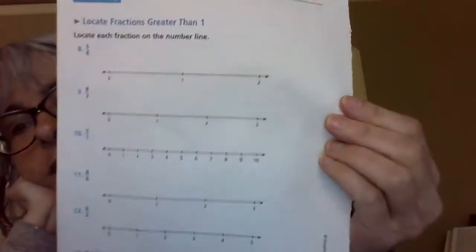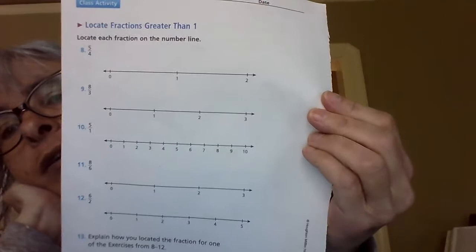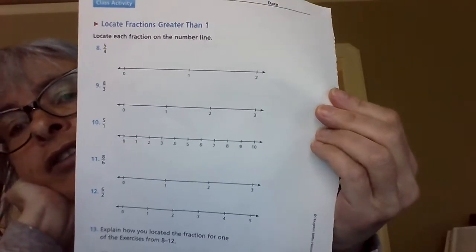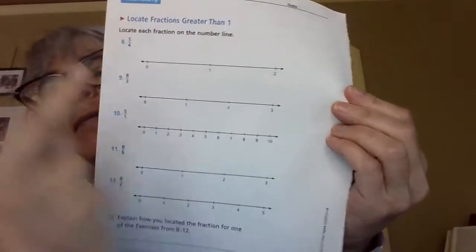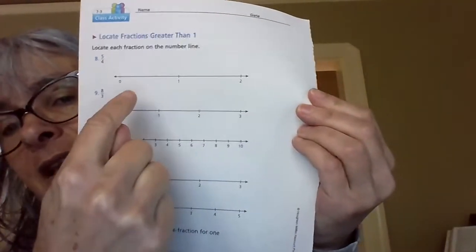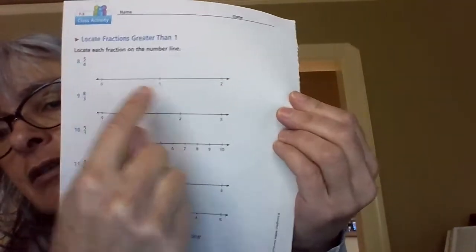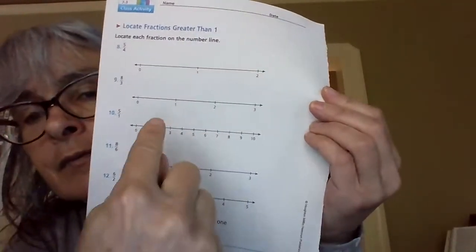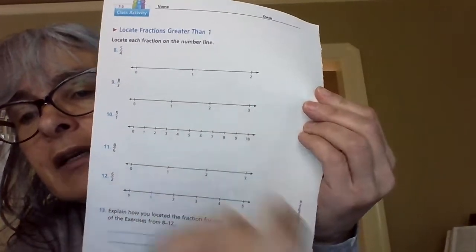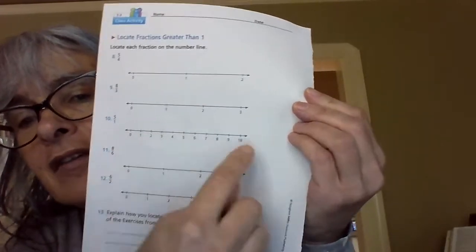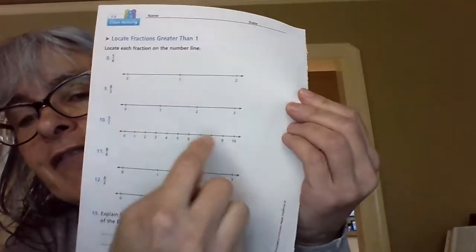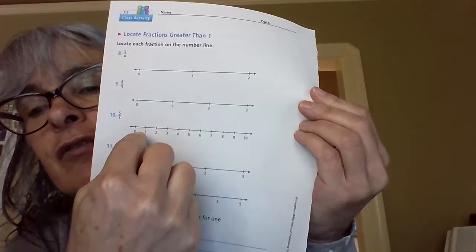Let's take a look at page 376: 'Locate fractions greater than one — locate each fraction on the number line.' What's confusing is that these are number lines like we're used to seeing with whole numbers. This one only goes up to two, this one up to three, and this one up to ten.